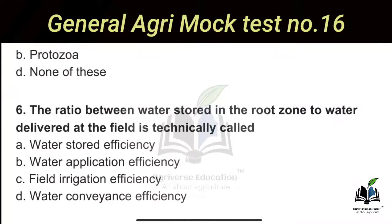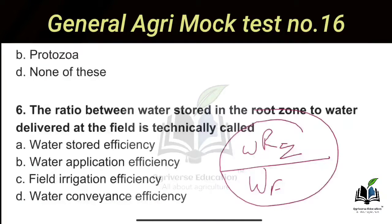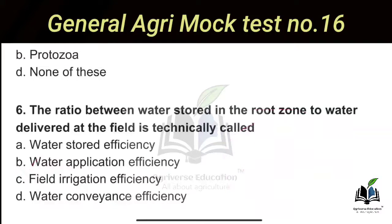The sixth question is from Irrigation Agronomy: The ratio between water stored in the root zone to water delivered at the field is technically called what? This ratio is called Water Application Efficiency. So water application efficiency is the ratio between water stored in the root zone to water delivered at the field.